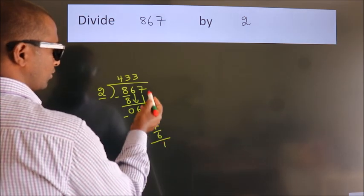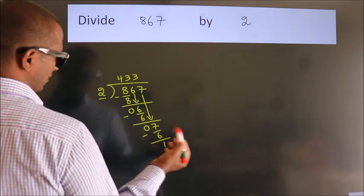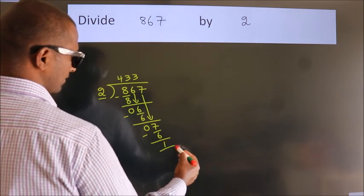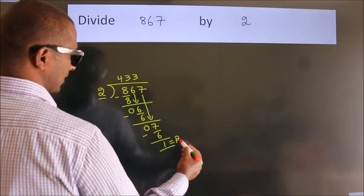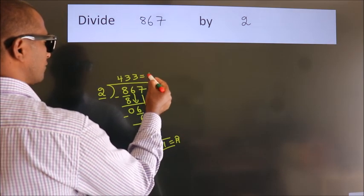After this, no more numbers to bring it down. So, we stop here. This is our remainder. This is our quotient.